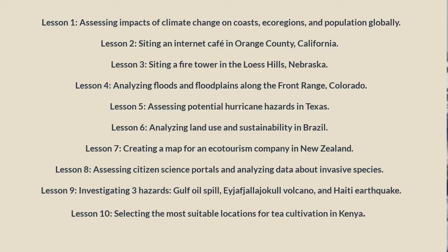The titles of the ten lessons are as follows. Lesson 1: assessing impacts of climate change on coasts, ecoregions, and population globally. Lesson 2: siting an internet cafe — a high-speed internet cafe in Orange County, California. Lesson 3: siting a fire tower in the Loess Hills of Nebraska, land of the loess. Lesson 4: analyzing floods and floodplains along the Front Range in Colorado. Lesson 5: assessing potential hurricane hazards in Texas.